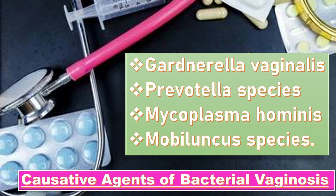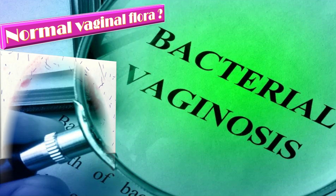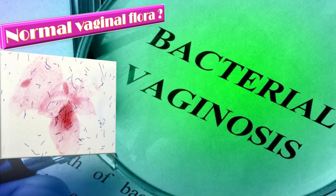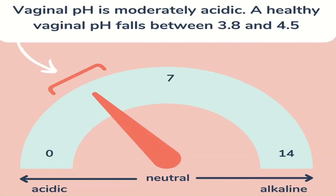The normal vaginal flora are microorganisms always present in a person that usually do not cause any disease. In bacterial vaginosis, a shift in normal vaginal flora from aerobic to predominantly anaerobic flora occurs, characterizing the condition. This leads to replacement of lactobacilli and an increase in pH from the normal of 4.5 to 7.